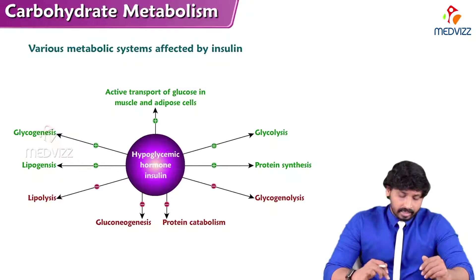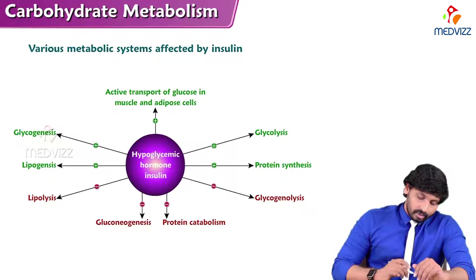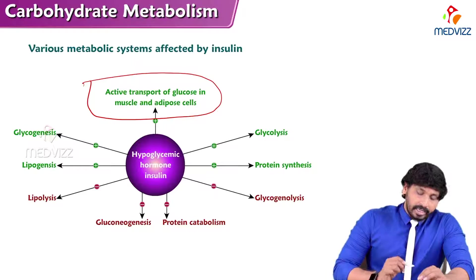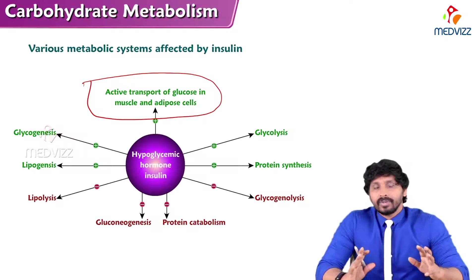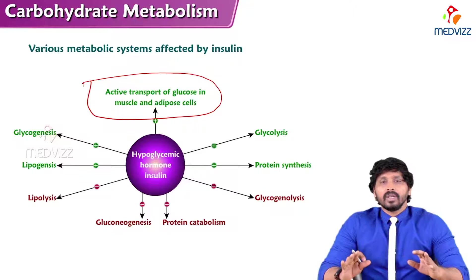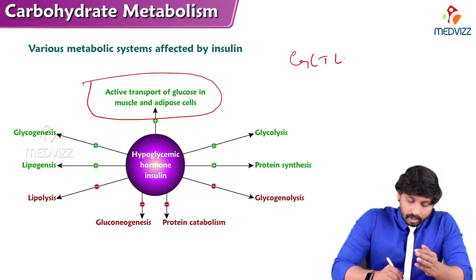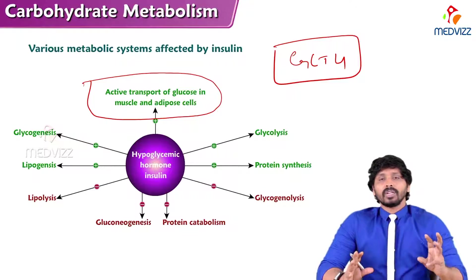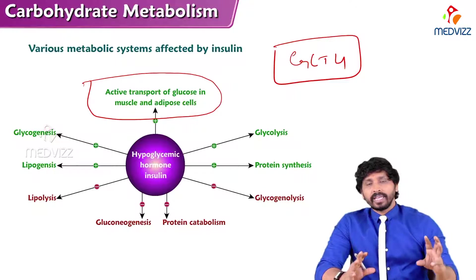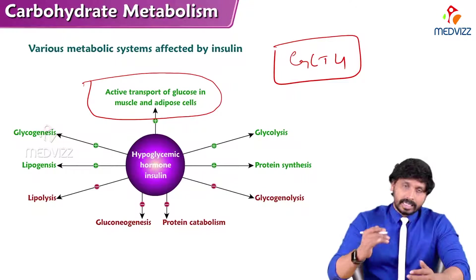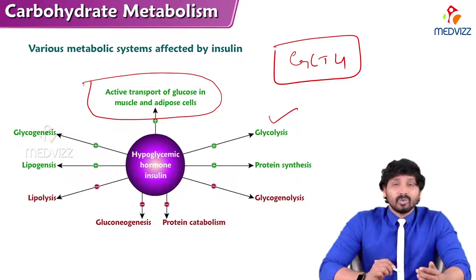Insulin reduces blood glucose levels in a number of ways, as shown in the diagrammatic presentation. First, it facilitates glucose transporters. We have GLUT1, GLUT2, GLUT3, GLUT4, GLUT5, GLUT7, and sodium-dependent glucose transporters. Out of all these, GLUT4 is under insulin action — it is abundantly present in skeletal muscle. Insulin opens the GLUT4 gate so glucose in circulation enters skeletal muscle cells, decreasing glucose concentration.